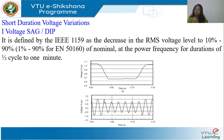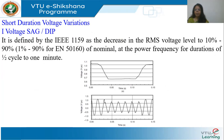In summary, long duration variations are: over voltage between 110 to 120 percent, under voltage between 80 to 90 percent, and interruption where the voltage is close to zero — all lasting more than one minute.